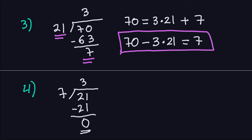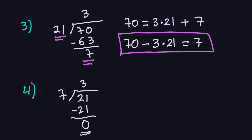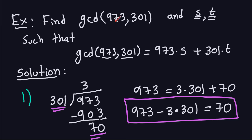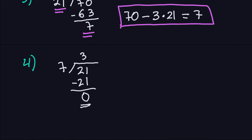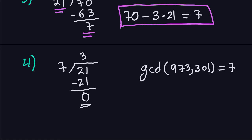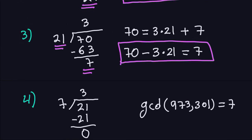So I've found one of the answers: the GCD between 973 and 301 is 7. Now the next part is I need to write down the number 7 as a multiple of 973 plus a multiple of 301. To do that, I'm going to use all the boxed equations we've been building.